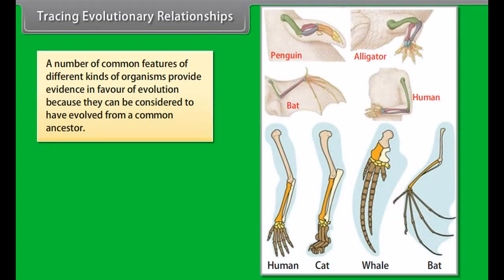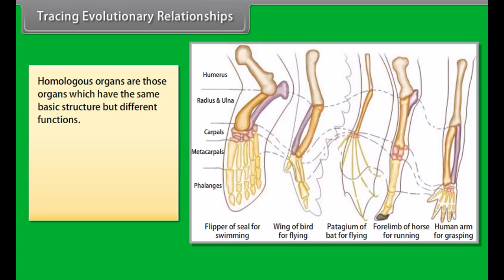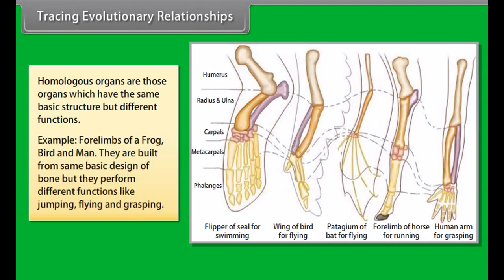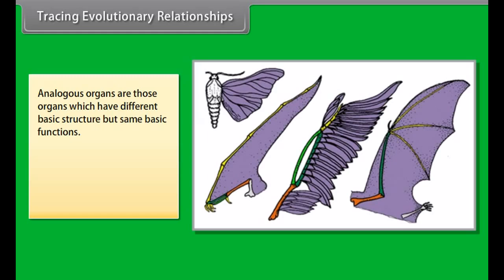Similarities among organisms allow us to group them. The more characteristics two species have in common, the more closely they are related, and the more recently they will have had a common ancestor. This can be understood by the example of a brother and sister, who are more closely related because their ancestors are common. We can build small groups of species with recent common ancestors, then supergroups of these groups with more distant common ancestors.